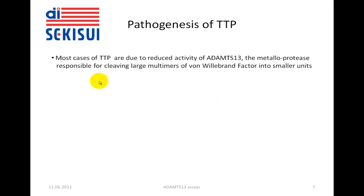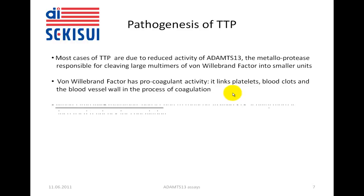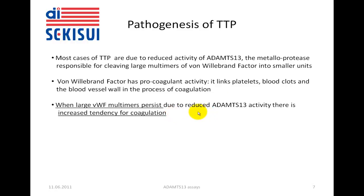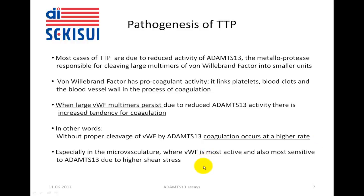The pathogenesis of TTP. Most cases of TTP are due to reduced activity of ADAMTS-13. As stated before, von Willebrand factor has pro-coagulant activity — it links platelets, blood clots, and the blood vessel wall in the process of coagulation. When large von Willebrand factor multimers persist due to reduced ADAMTS-13 activity, there is an increased tendency for coagulation. In other words, without proper cleavage of von Willebrand factor by ADAMTS-13, coagulation occurs at a higher rate — we have a pro-coagulant status. This happens especially in the micro-vasculature where von Willebrand factor is most active and most sensitive to ADAMTS-13 due to higher shear stress.